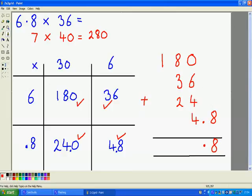6 units add 4 units add 4 units. It's 14 units. That's 1 ten and 4. So I'm going to carry that.